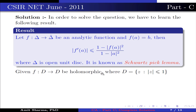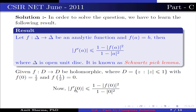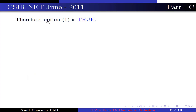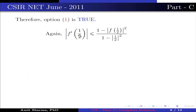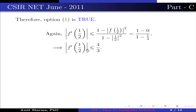Given f from D to D holomorphic with f(0) = 1/2 and f(1/2) = 0. Now |f'(0)| ≤ (1 - |f(0)|²) / (1 - |0|²) = (1 - 1/4) / 1 = 3/4. So |f'(0)| ≤ 3/4, and option 1 is true. Again |f'(1/2)| ≤ (1 - |f(1/2)|²) / (1 - |1/2|²) = (1 - 0) / (1 - 1/4) = 4/3. So |f'(1/2)| ≤ 4/3, and option 2 is true.